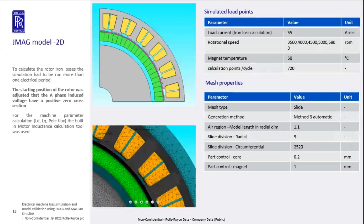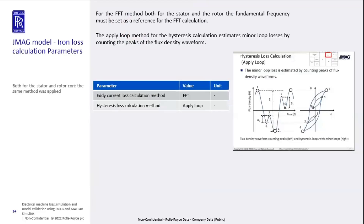I'd like to briefly show the model setup used in JMAG. This project was mostly focused on loss simulation and loss validation. The mesh quality was increased in the core — both rotor and iron — and in the air gap. I used built-in material parameters from the JMAG library and simulated different rotational speeds, setting temperature to a realistic value. One important step for the PWM investigation: we used JMAG's motor inductance calculator tool to define machine parameters like Ld, Lq, and the pole flux. For eddy current loss calculation we used the FFT method, and for hysteresis loss calculation we used the minor loop method, which estimates minor loop losses based on the flux density waveform.